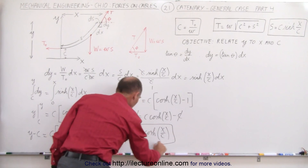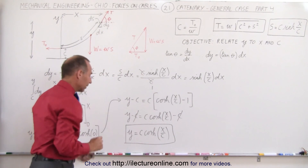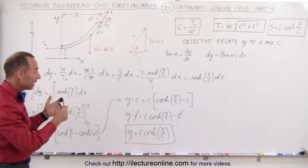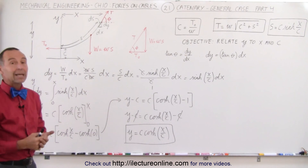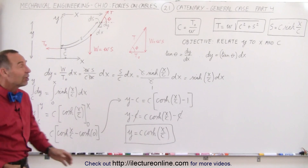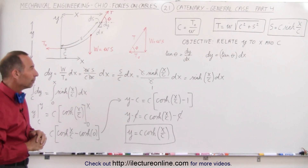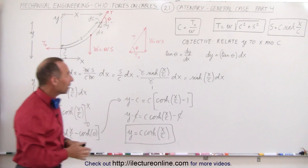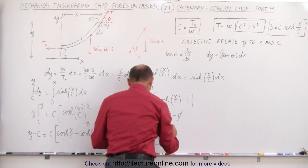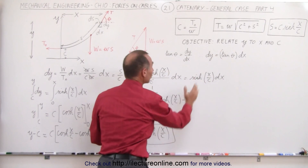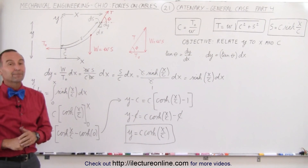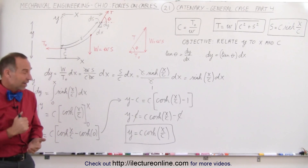Here we have one more equation that allows us to solve problems of catenaries — cables hanging under their own weight that don't have the shape of a parabola. Now we have these three equations, and we can add a fourth equation to our set, helping us solve the catenary. And that's how it's done.